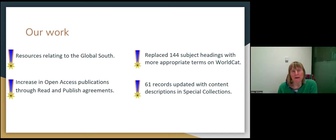Our colleagues in metadata have looked to replace subject headings deemed offensive, discriminatory, or biased. So far they've looked to replace 144 headings with more appropriate terms on WorldCat, which drives our library search and catalogue. That work is ongoing and we're looking to collaborate with other libraries to share results and terminology. We also have a special collections group of resources, and we've updated 61 records with updated content descriptions — replacing those that are outdated, biased, discriminatory, or racist, because there's quite a lot of archival content that really does have some outdated terminology.